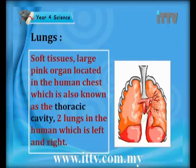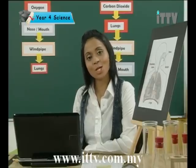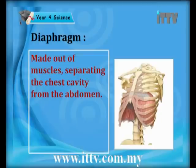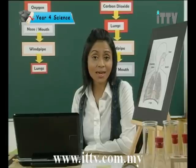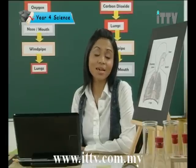The lungs are actually soft tissues. They are large and pink in colour and they are located in the human cavity known as the thoracic cavity. We have got two lungs — the left and the right ones. These further divide into lobes. The diaphragm is actually made out of pure muscles. They separate the thoracic cavity from the abdomen.